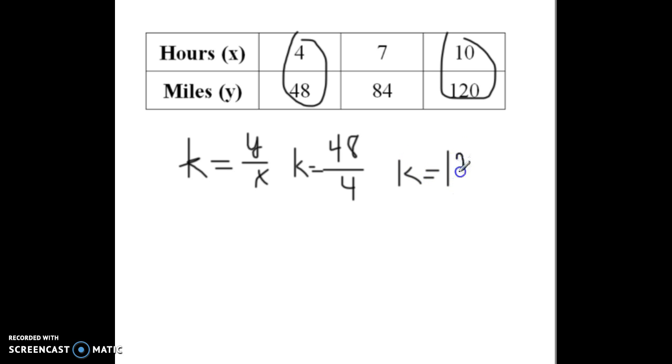We could do the same thing with either of the other sets of numbers. This one is easy to see. 120 divided by 10 is 12. So, what does this represent? 12. And this is going to be miles because y was miles, per one hour. So, we're going 12 miles an hour, which isn't very fast. So, that's the constant of proportionality, 12. And what it means is 12 miles per hour.